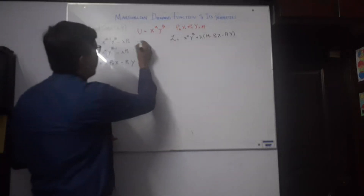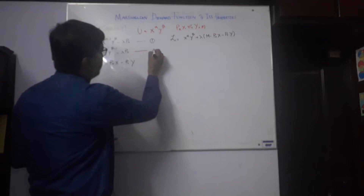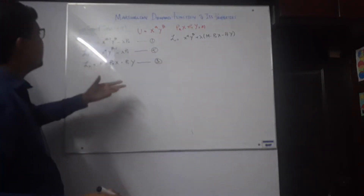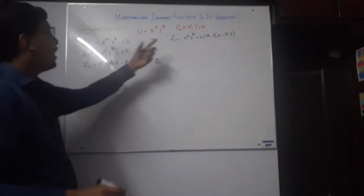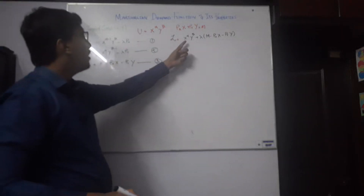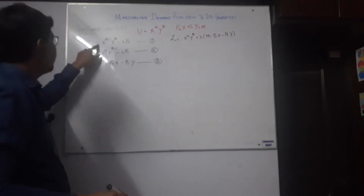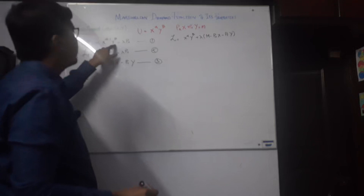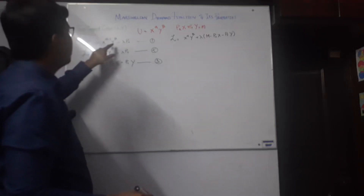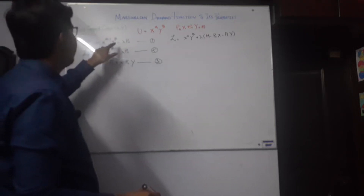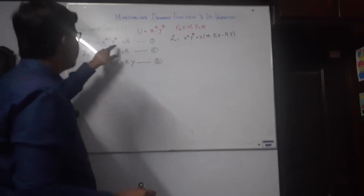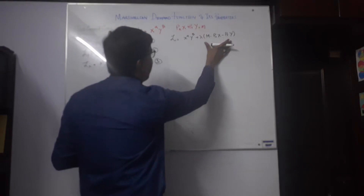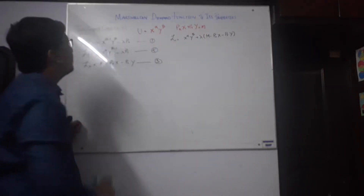When we set up the partial derivatives, we will have three equations: equation 1, equation 2, and equation 3. Using the partial derivative with respect to X, the power alpha comes down to the base giving alpha minus 1, while beta is treated as a constant and stays as is in the multiplication. This gives us minus lambda Px.